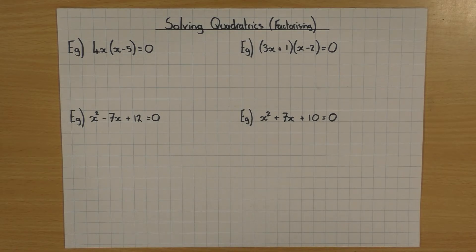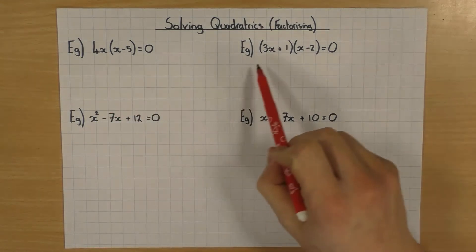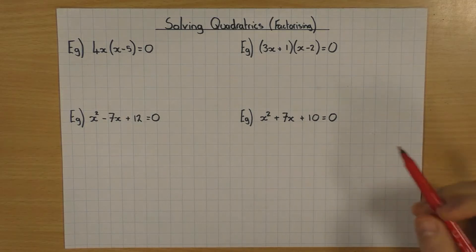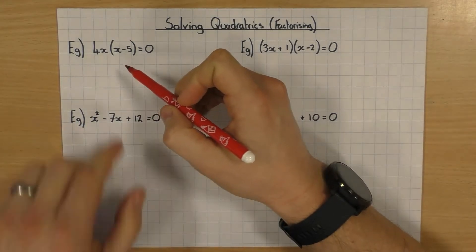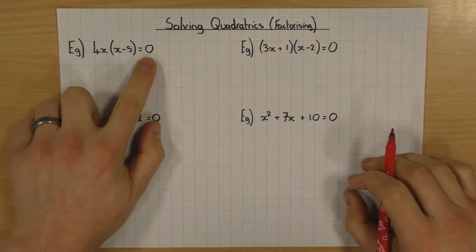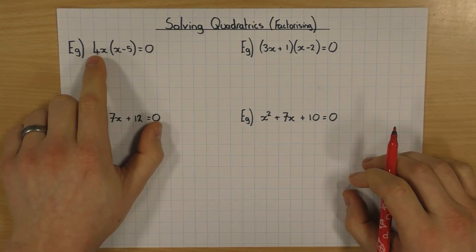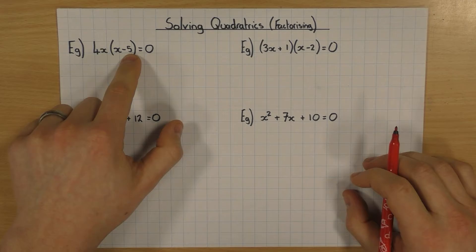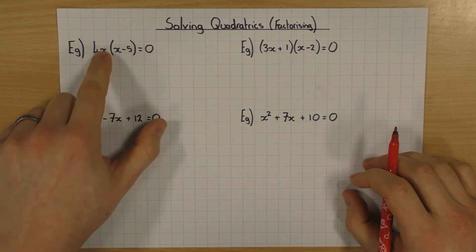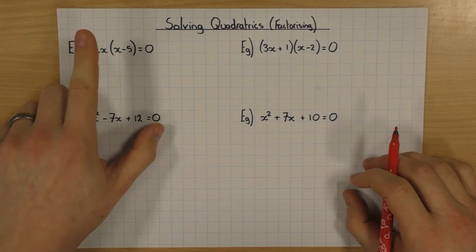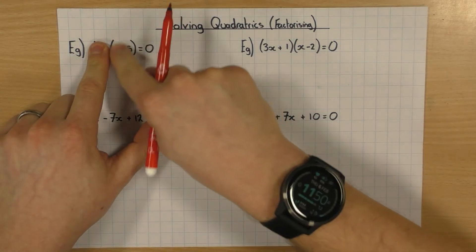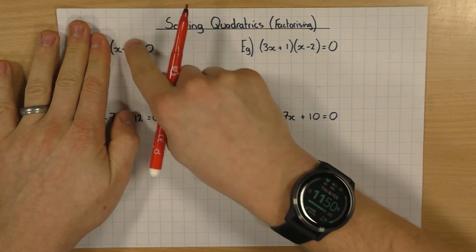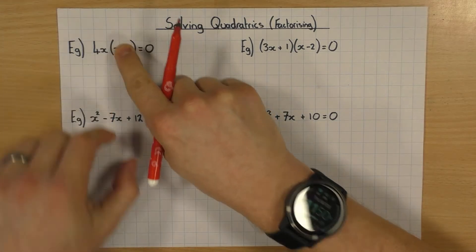So why do we factorise and how do we actually solve quadratics by factorising? My first two examples here have already been factorised, and this could come up in the foundation where they give you something already factorised. How it works is it must always be equal to zero, which it is in this case. I'm doing 4x times what's in the brackets here, which is x minus 5. How we go around solving this is we say: what does x need to be to make it zero? Because zero times whatever's in here will always give me zero. Likewise, I find out what x is in the brackets to make that zero, because then zero times whatever that is will again give me the answer of zero.